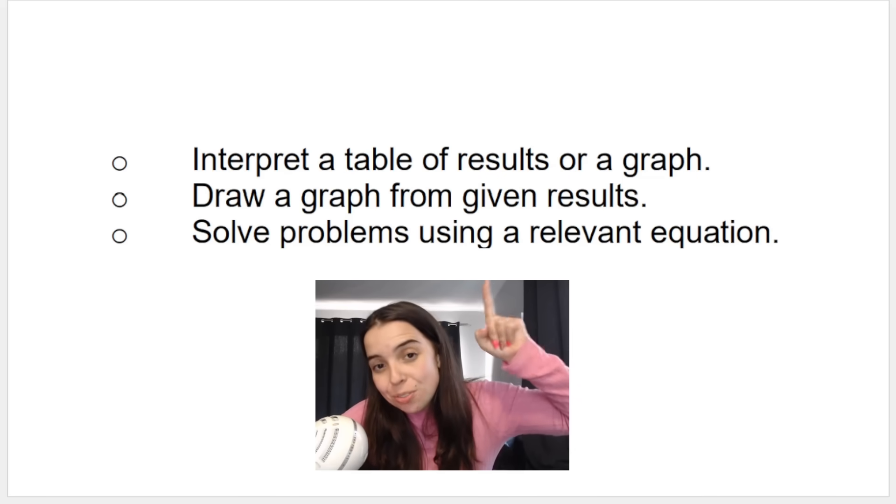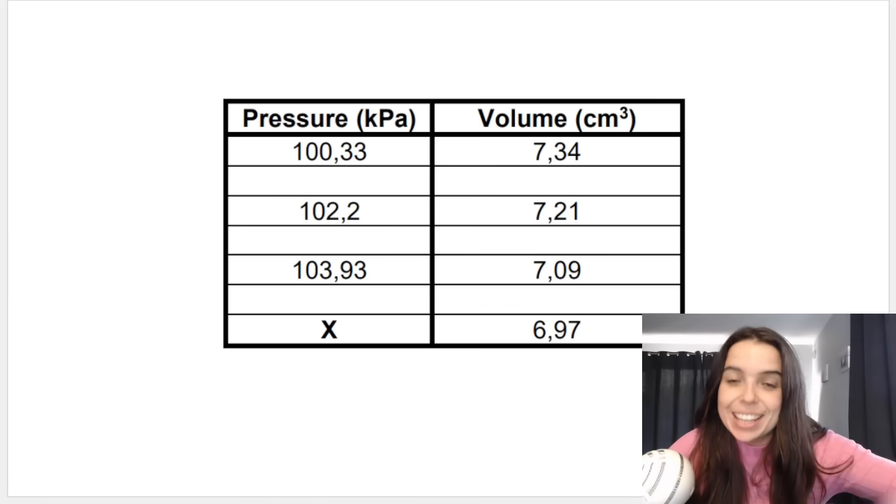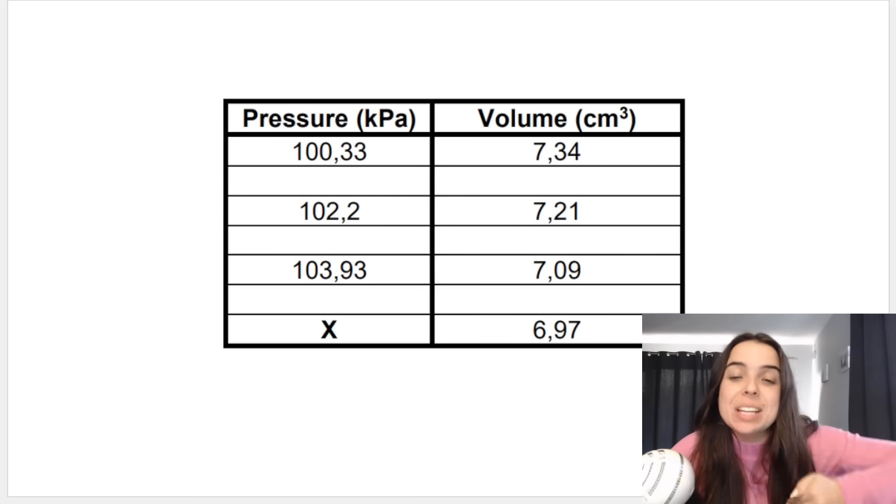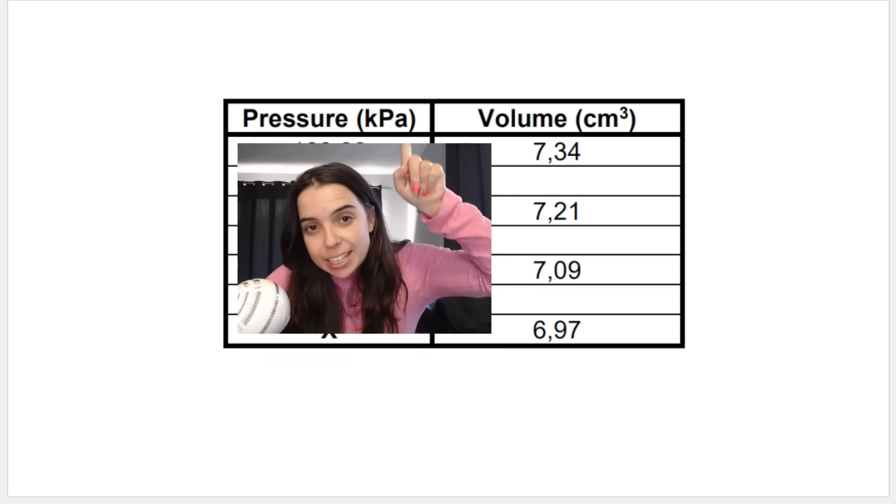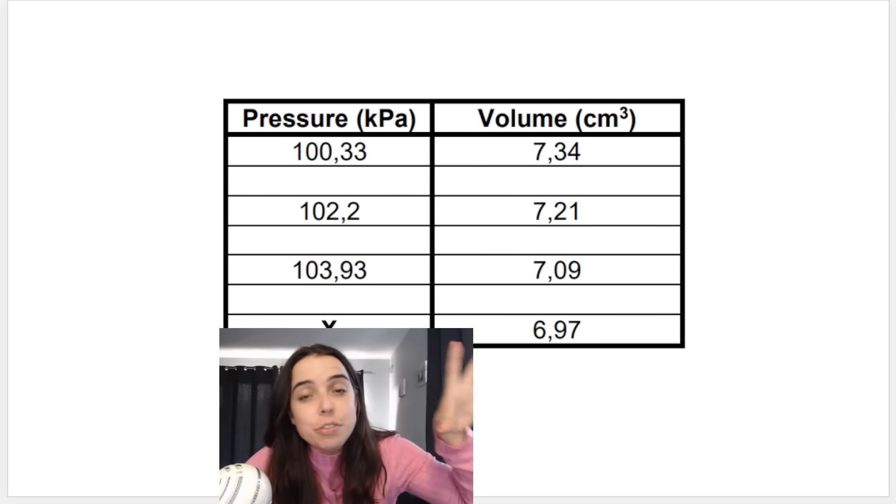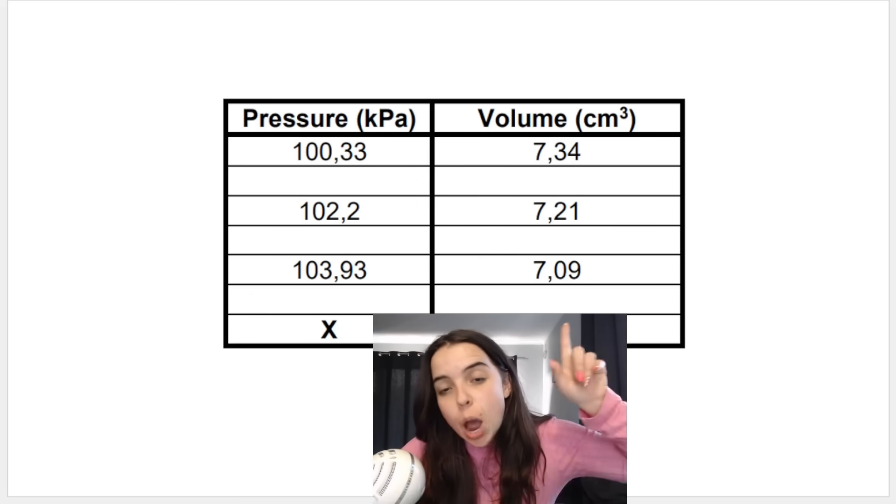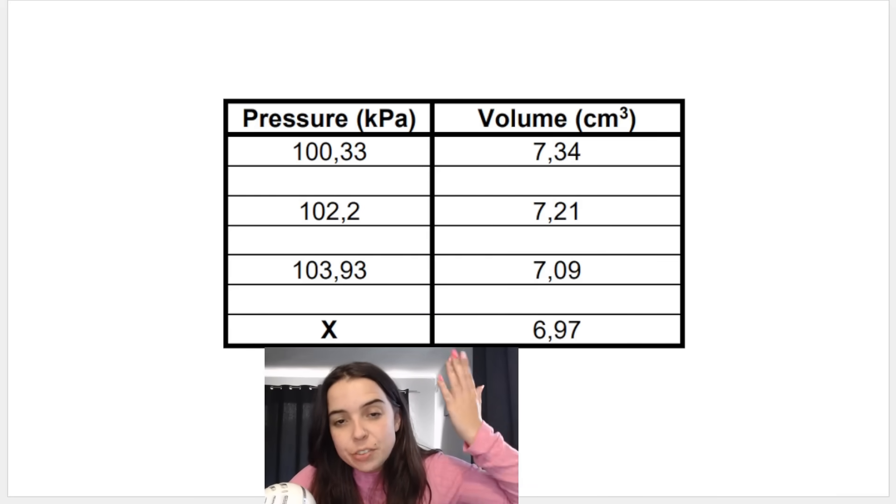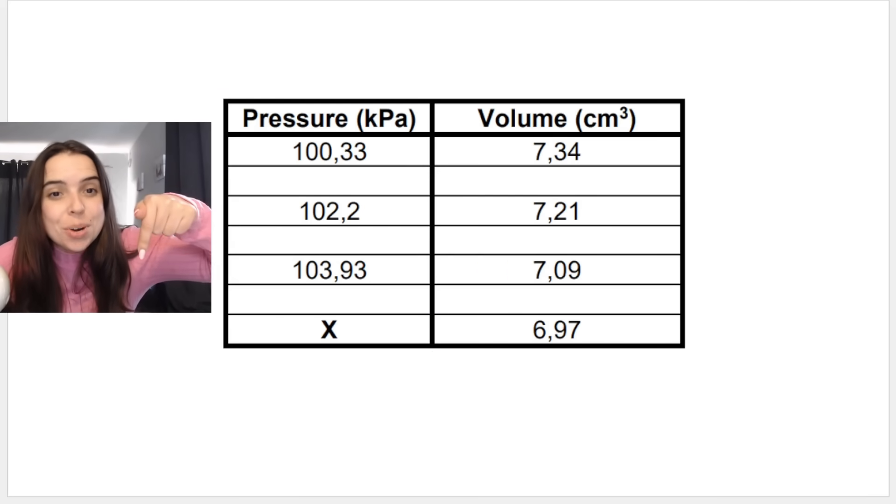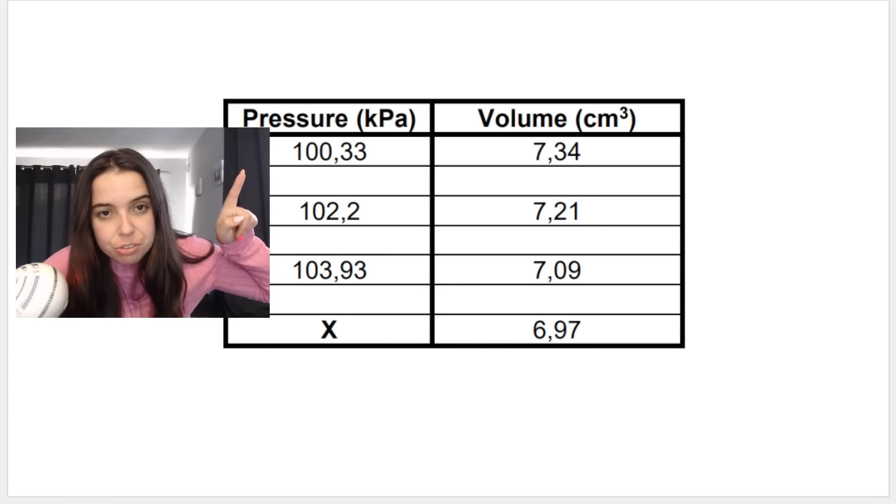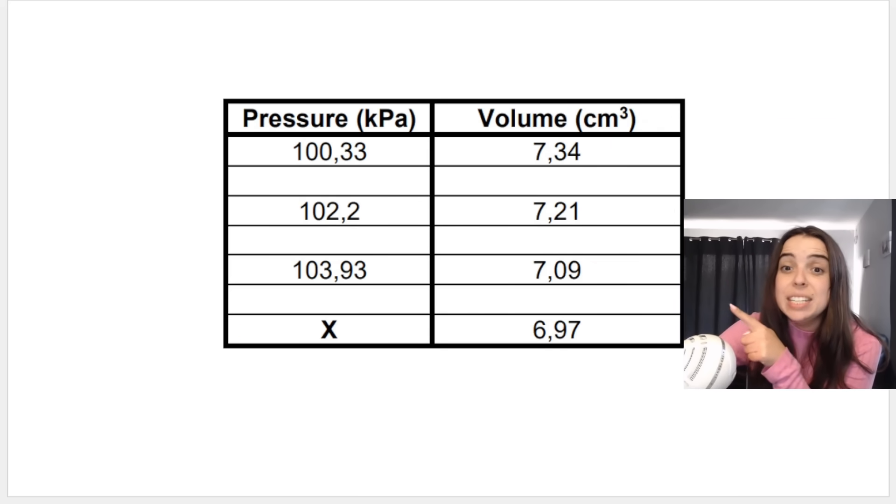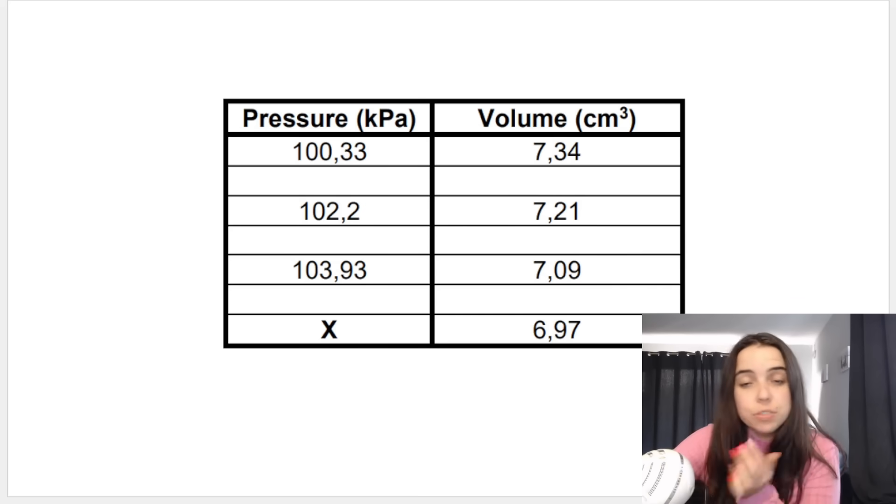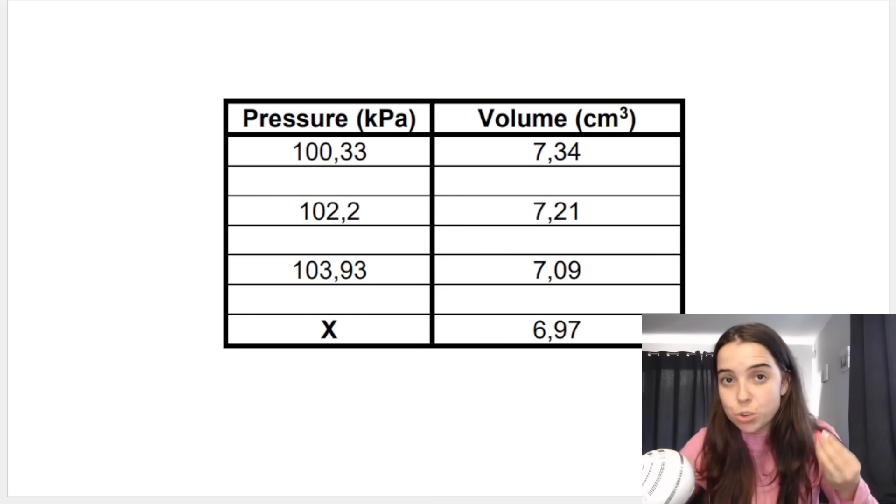When it comes to Boyle's law you need to be able to interpret data tables. Here's an example of a table with pressure measured in kilopascals and volume measured in cubic centimeters. If you look at the table as you go down, pressure is increasing from 100.33 and continuing to increase. But if you look at volume, as you go down volume is decreasing. Already from the data in the table we can tell this is representing Boyle's law and that inversely proportional relationship.